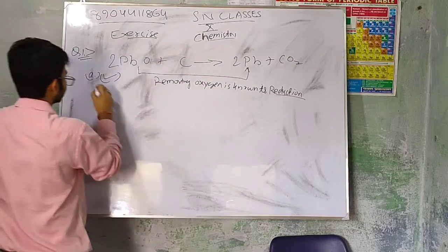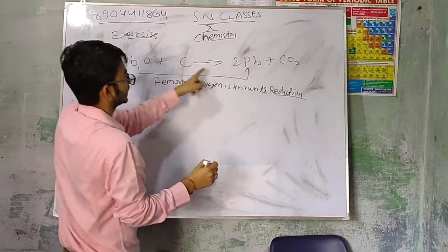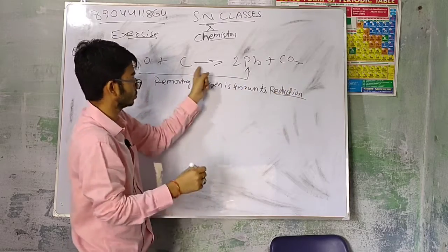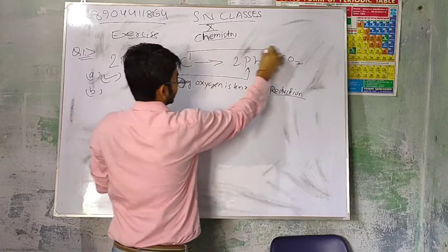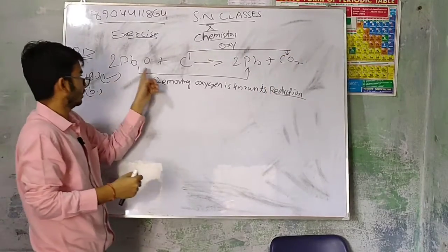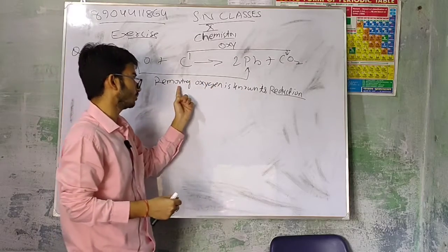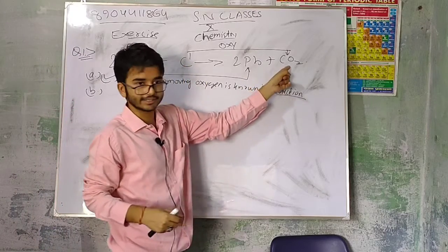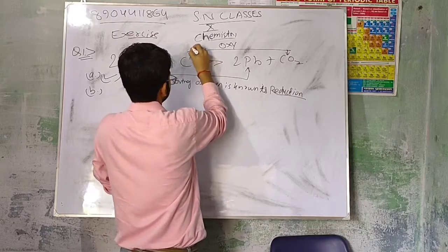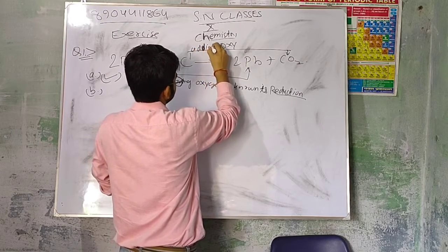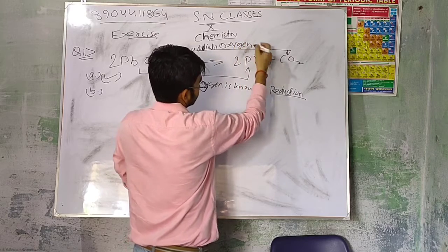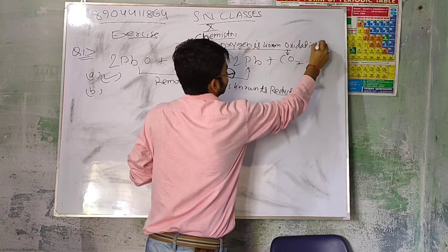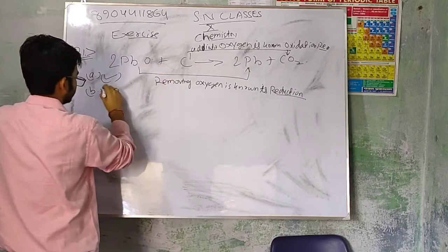Second statement: carbon is getting oxidized. Carbon becomes carbon dioxide. Carbon and oxygen will add, right? First option says PbO gets Pb - removal of oxygen is reduction, so statement A is correct. Statement B says carbon is getting oxidized, meaning carbon is getting addition of oxygen. Addition of oxygen is known as oxidation reaction. So option B is also true.